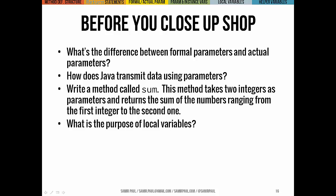Before we close up shop, a couple of ways for you to check to make sure you understood. If you can describe the difference between formal and actual parameters, and tell me about how Java actually transmits information between methods using parameters, that's a really important idea to take away from this. Try writing a method called sum, which takes two integers as parameters, and then returns the sum of all the numbers between the first and second one. And then, finally, if you can talk about local variables, what they're for, what the difference between a local variable and, say, an instance variable or a parameter, what the difference between those three is, I think you're probably in good shape for today. That's it! Maybe.